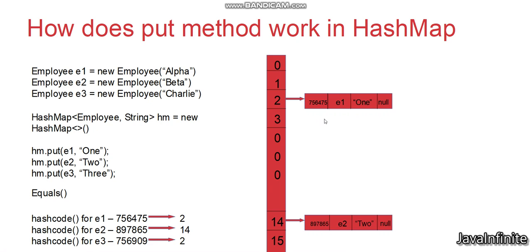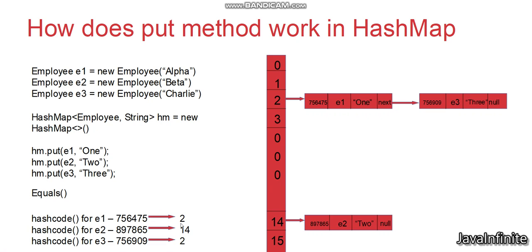When two entries land in the same bucket, HashMap uses chaining. The existing node's 'next' pointer — previously null — is updated to point to the new entry being inserted. So a new node is created with hash code 756909, key e3, value 3, and next node null. This is how the HashMap put method works: it calculates the hash code, decides the bucket via the indexing operation, and populates the value. Each bucket can hold more than one record, linked via the next node pointer.